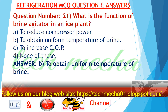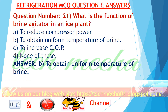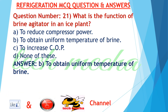Question number 21: What is the function of a brine agitator in an ice plant? A. to reduce compressor power, B. to obtain uniform temperature of brine, C. to increase COP, D. none of these. Answer: B. to obtain uniform temperature of brine.